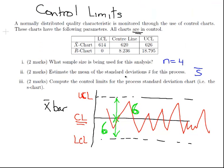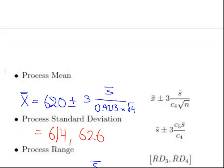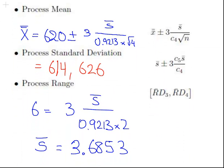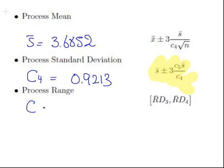The last thing is compute the limits for the process standard deviation chart, the S bar chart. We're going to use this formula here. S bar is equal to 3.6852. We've already seen that C4 was equal to 0.9213. But what's C5? It should be just beside it there in our correction factor.